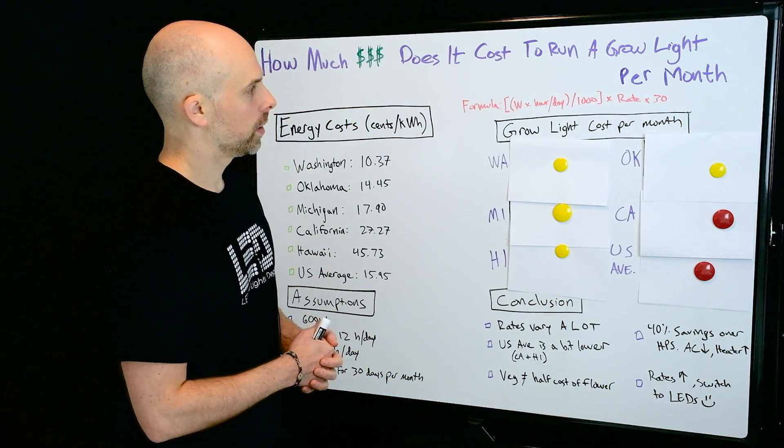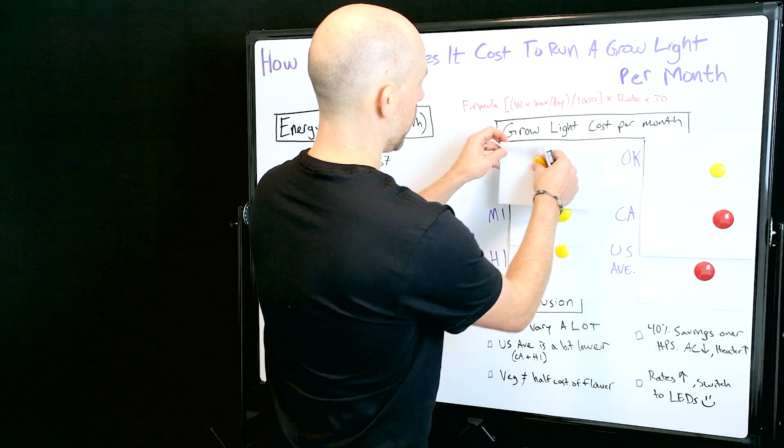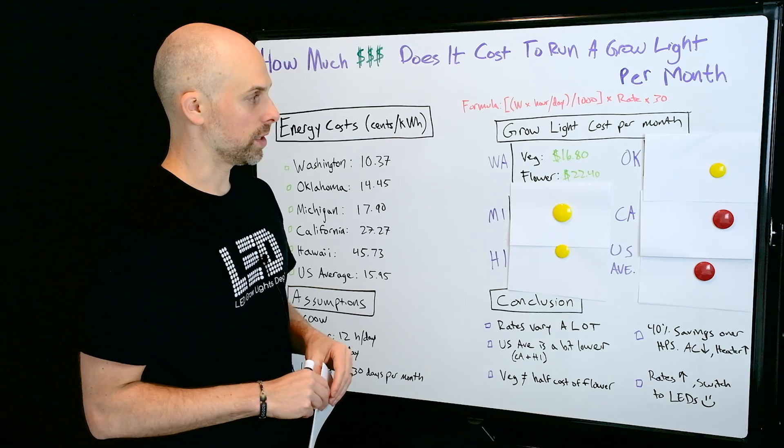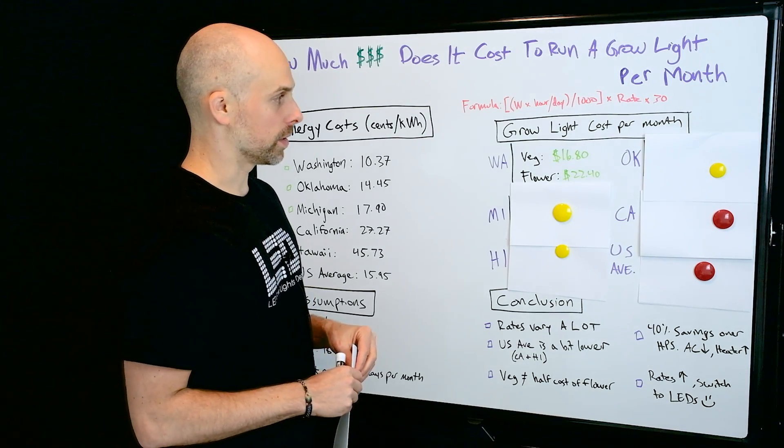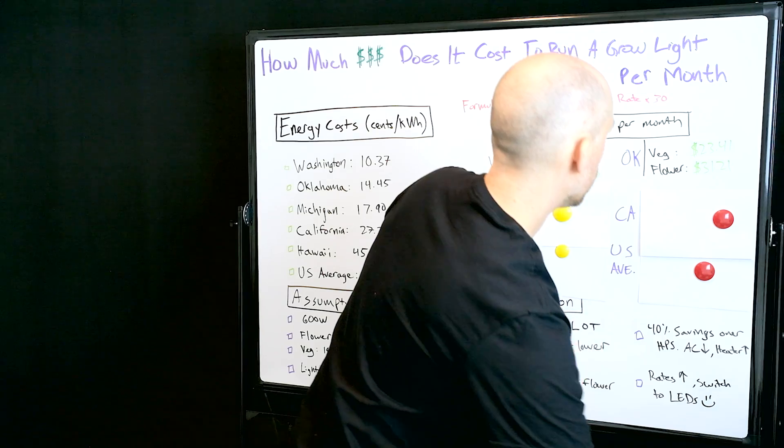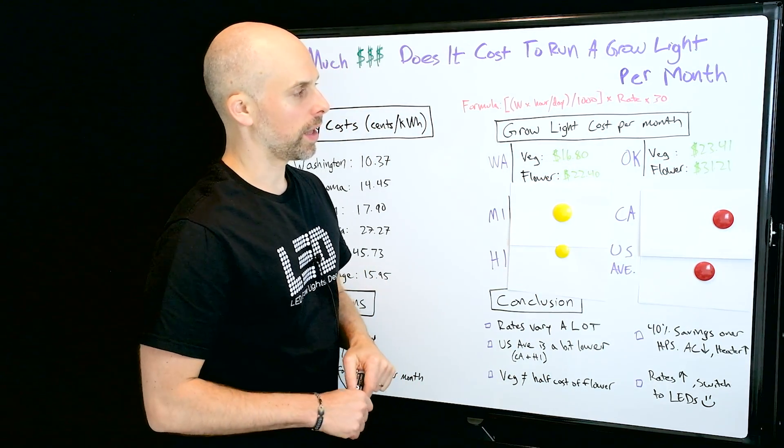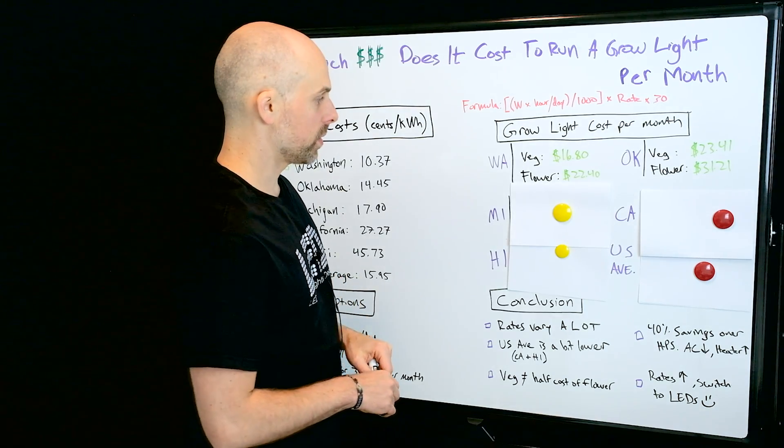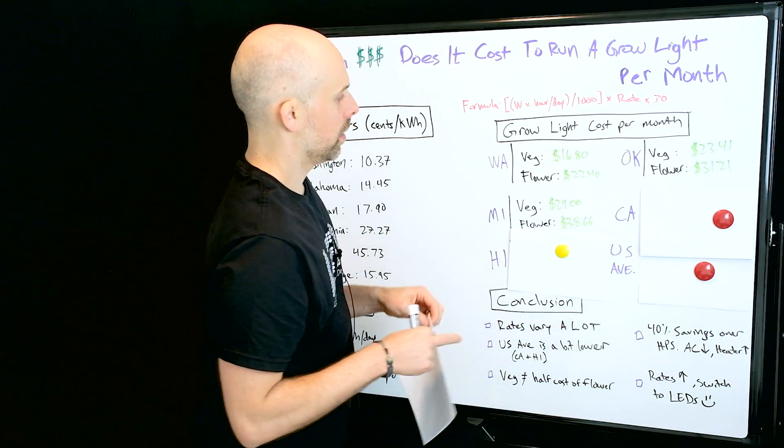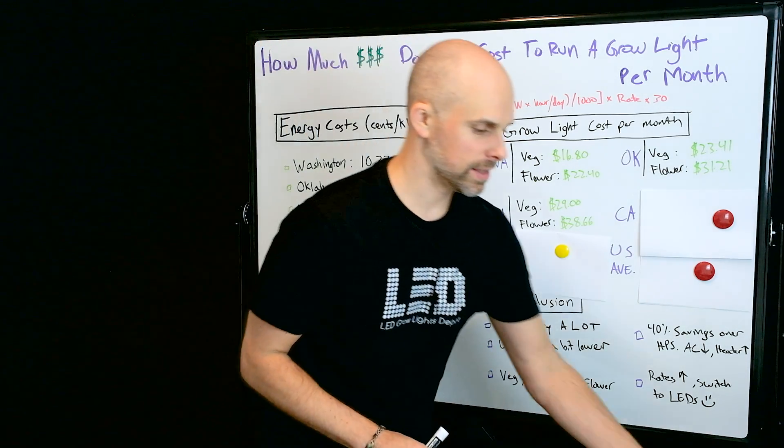All right, so let's get into it. How much does it cost to run a grow light in Washington? For veg and flower, veg is $16.80 and flower is $22.40. Next, Oklahoma: to veg it's going to be about $23.41 and to flower $31.21. Michigan: to veg $29 and to flower $38.66.